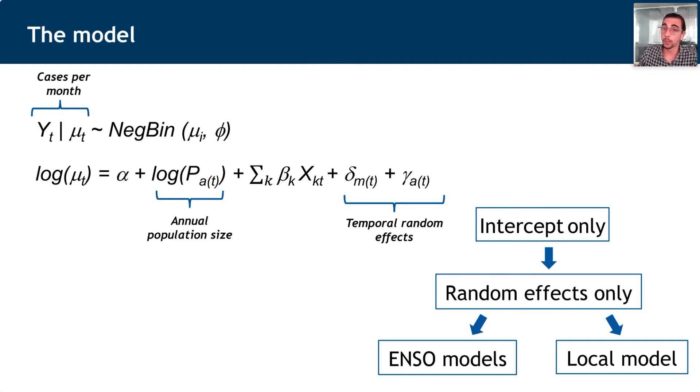We also included temporal random effects: seasonal random effects, represented by delta with the function Random Walk 2, and annual random effects extracted from an IID distribution. These temporal random effects are able to replace all those variables that we weren't able to manage or measure in these two provinces. That is one of the strengths of this methodology because normally when working with surveillance data, we don't have access to this information or the entire information about the system.